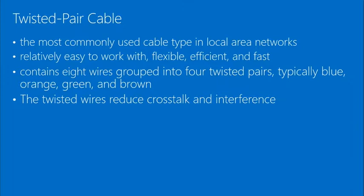Twisted pair cable is the most commonly used cable type in local area networks. It's relatively easy to work with, flexible, efficient, and fast. It contains eight wires grouped into four twisted pairs — blue, green, orange, and brown. The twisted wires reduce crosstalk, noise, and interference between the wires, which we'll talk about more in a little while.